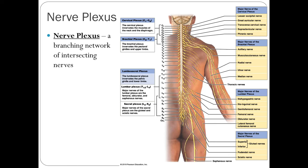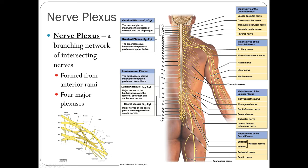A nerve plexus is a branching network of intersecting nerves, formed mainly from the anterior rami of spinal nerves that connect, branch, and join with other spinal nerves. There are four major plexuses: the cervical plexus in the cervical region, the brachial plexus in the upper arm, the lumbar plexus in the lower back, and the sacral plexus farther down. For example, the brachial plexus shows significant cross-talk where C5 to T1 become highly interconnected.